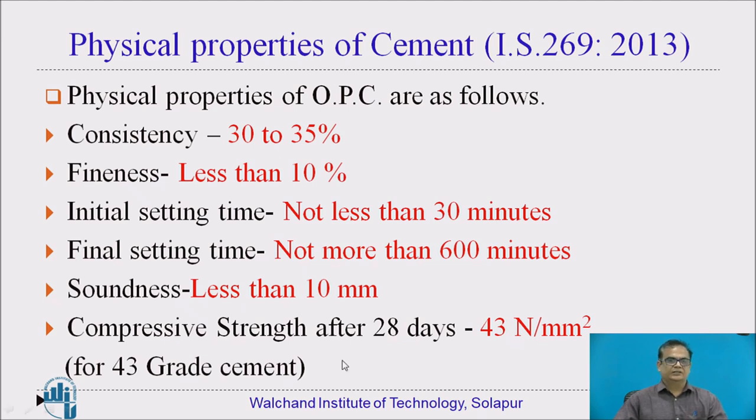So, cement comes in three grades, namely 33, 43, and 53 N per mm².